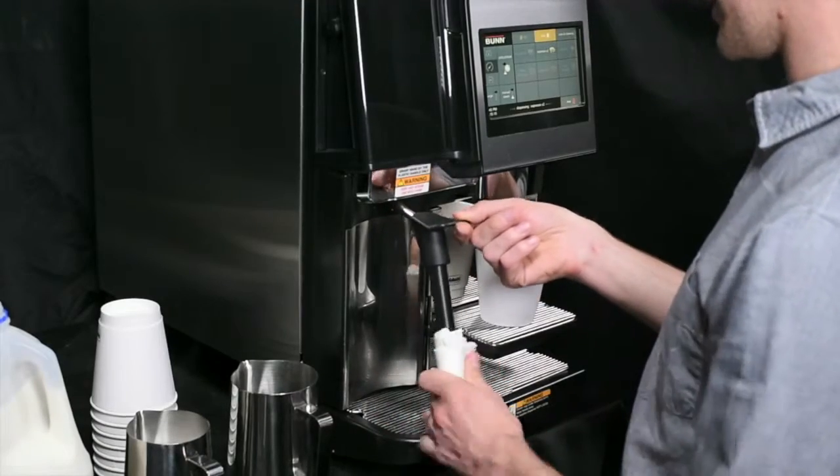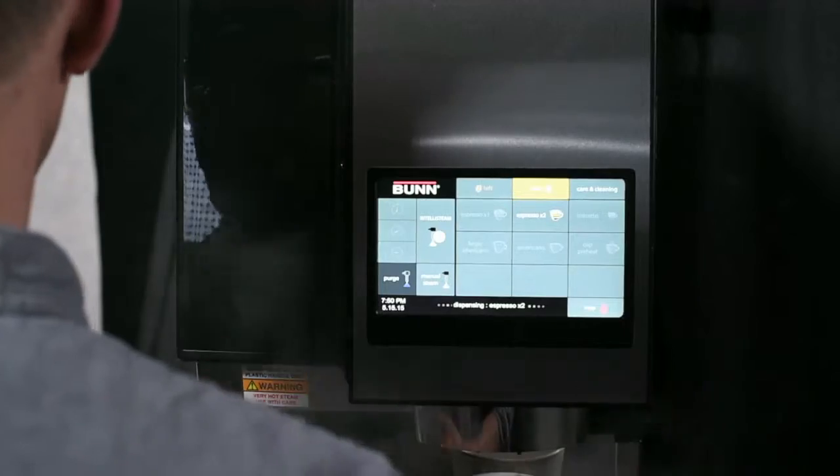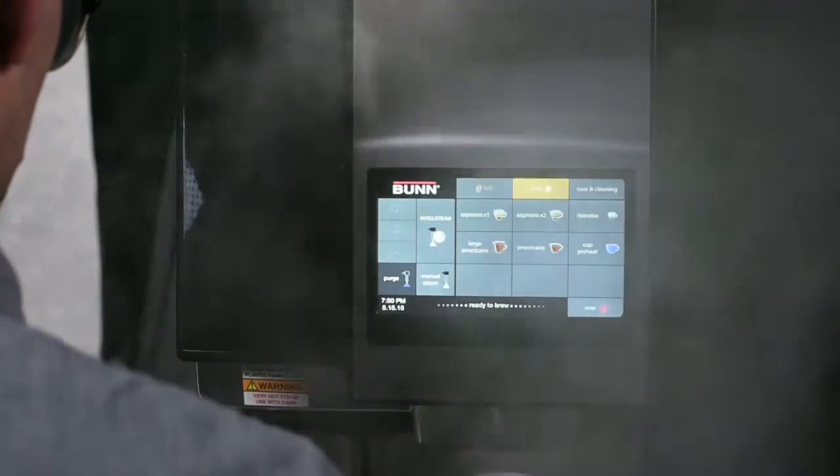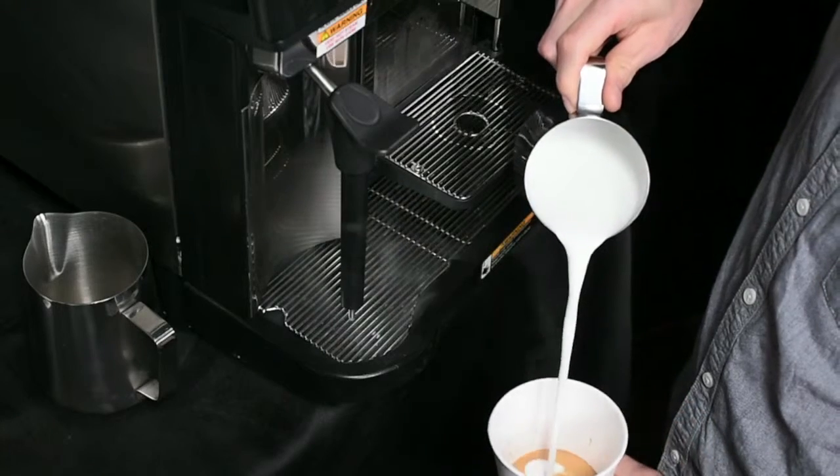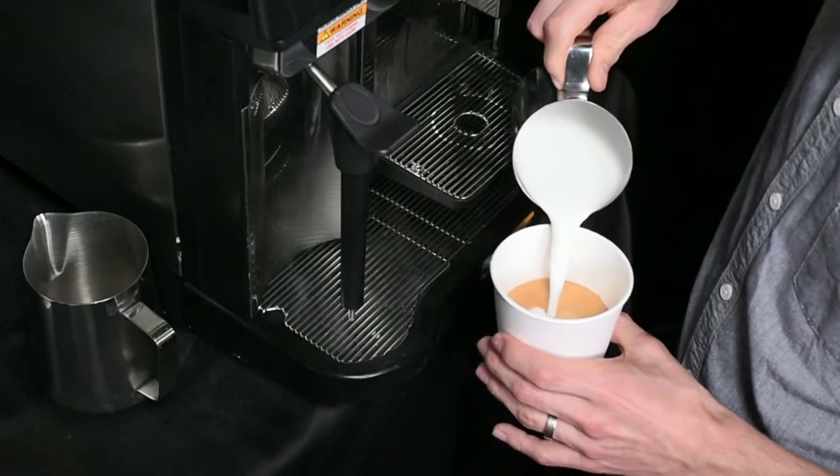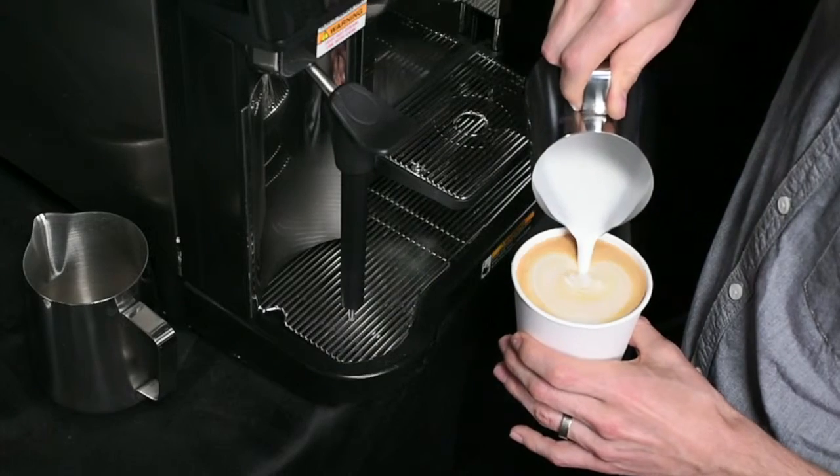Wipe and purge your steam wand. Then, lightly groom your milk by swirling it in the pitcher and add it to your espresso. Milk texture can be changed by adding more or less air to create more or less foam for different beverages.